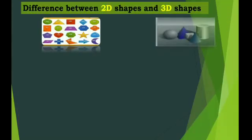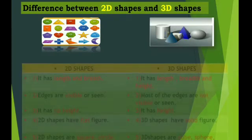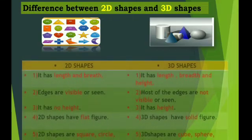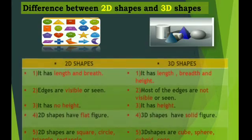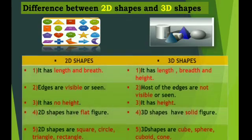Now the difference between 2D shapes and 3D shapes. There are some differences in 2D shapes and 3D shapes which makes them different. For example, differences in height, length, visibility, etc.